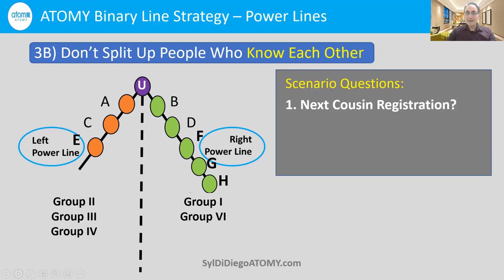Even in the case of Cousin Mary, think about what might happen — and we've seen this many times. Let's say you put Cousin Mary on the left side. Cousin Mary is very active socially and she starts to contact Uncle Al. Uncle Al loves Cousin Mary, so he says he'll use the products and even sign up. Now you have a dilemma: Uncle Al is going to be signed up under Mary, and you've started to split the group, which is not good.